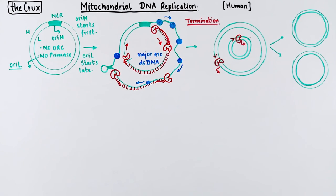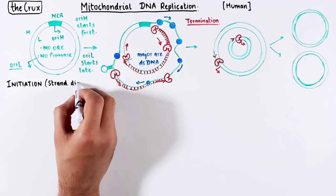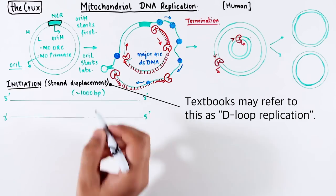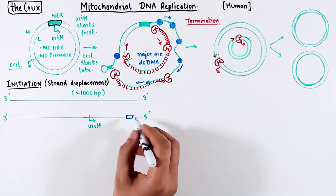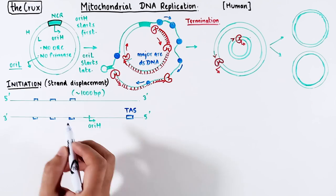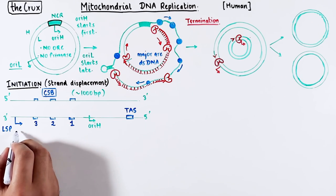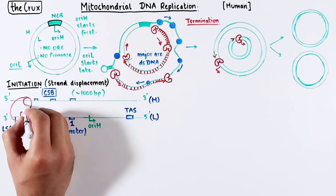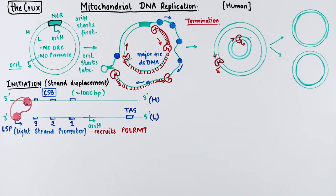That was the vanilla version. Now let's add proper details through the strand displacement model. We will start with OriH, which is contained in a complex non-coding region of about 1000 bases in length. This region contains the OriH, the termination-associated sequence (TAS), three positions marked as conserved sequence blocks (CSBs), and upstream is the promoter on the light strand — the LSP. It all starts when the light strand promoter recruits RNA polymerase, so transcription starts from the LSP into the direction of OriH.